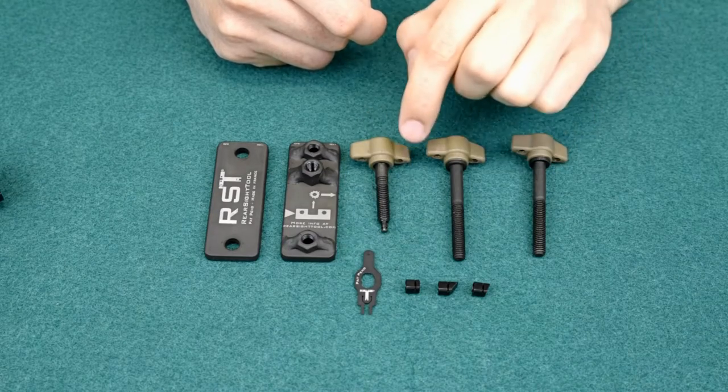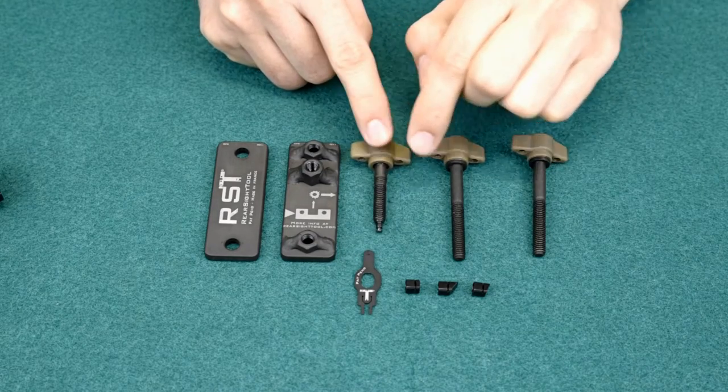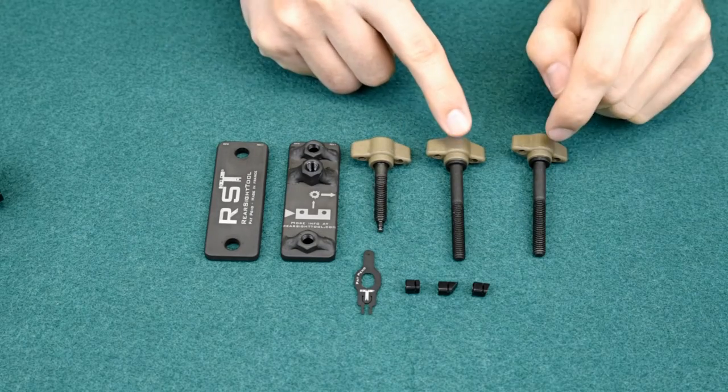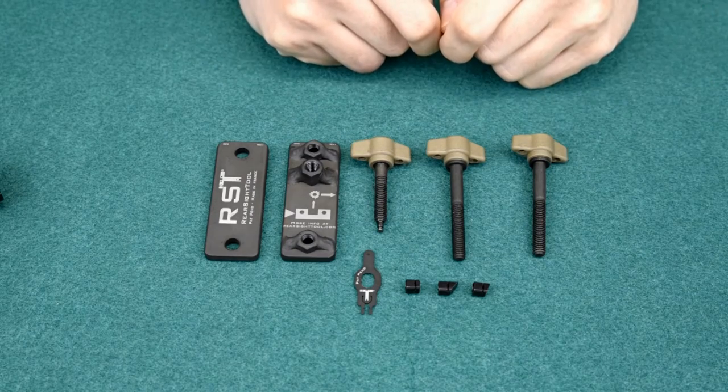The guiding plate, the drift screw. This part we are going to refer to as the drift screw tip, and we also have two tightening screws.